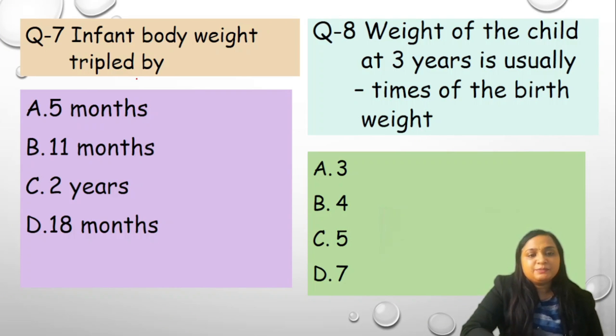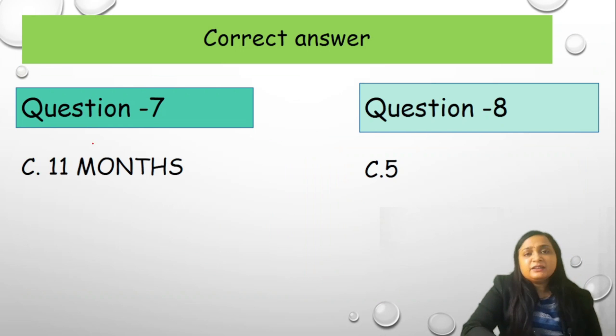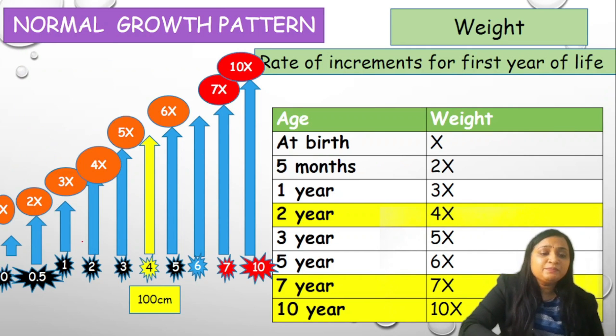Your next question is infant body weight triples by - tripled by your options are A 5 months, B 11 months, C 2 years and D 18 months. The nearest answer is 11 months. Option C is a correct answer. Again, the explanation will remain same that at birth x, 0.5 months it is 2x, 1 year 3x, 2 year 4x, 3 year 5x. At around 1 year, 11 months to 12 months it is 3x.